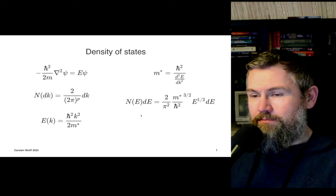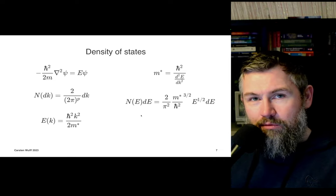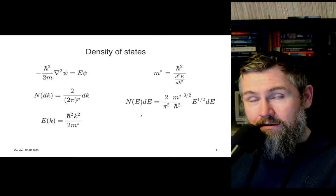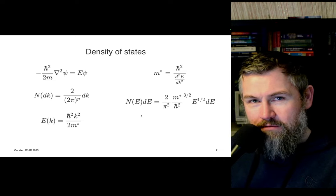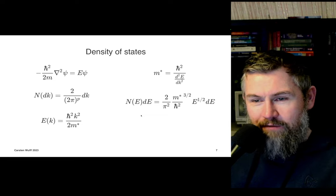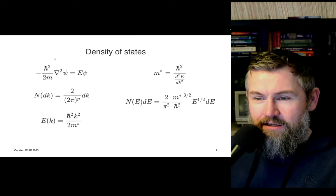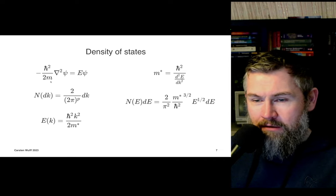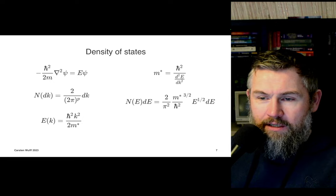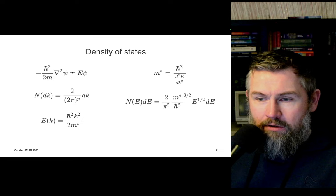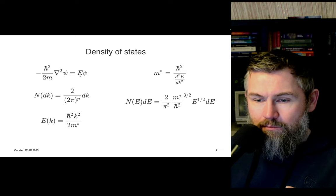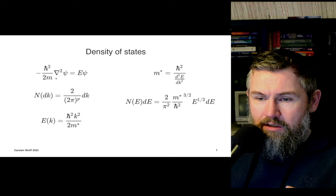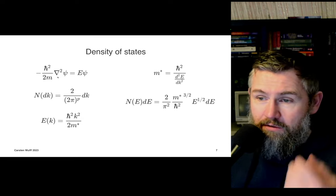So where does this come from? The density of states - how many available states are there for electrons and holes to be in as a function of energy? It turns out that in order to compute that, we have to go all the way back to Schrödinger. We have the wave function, the energy operator, the Laplacian which gives the second derivative representing momentum, and no voltage term multiplied by the wave function. This is how we get the time evolution of the wave function.